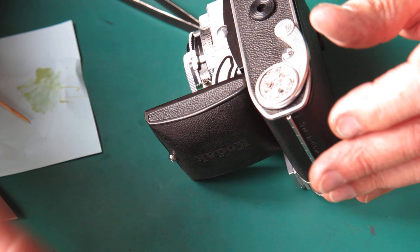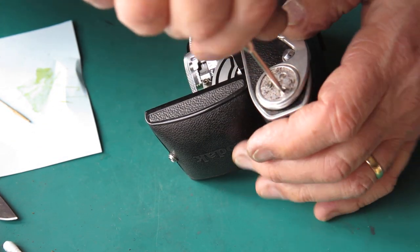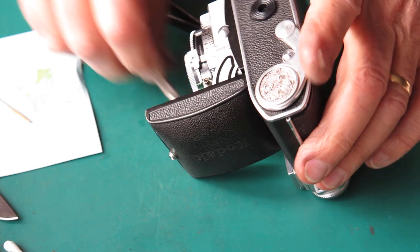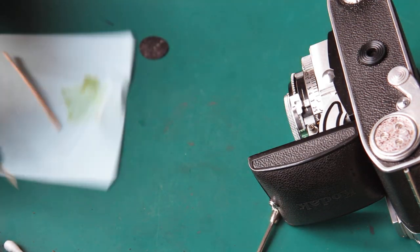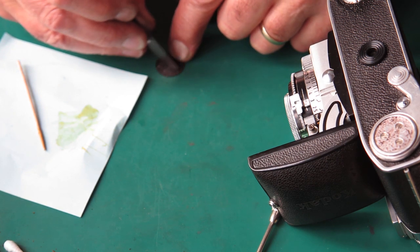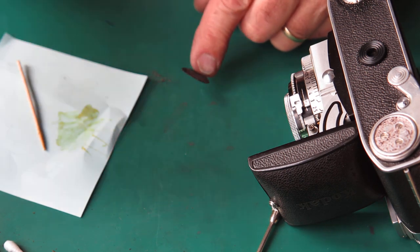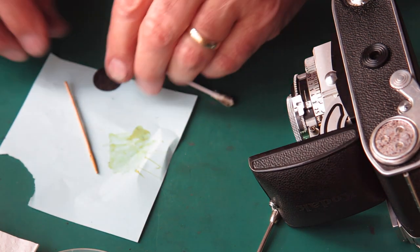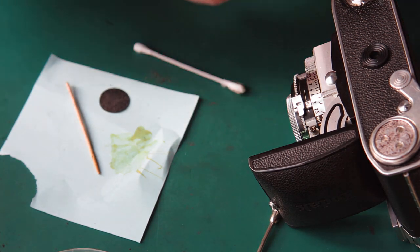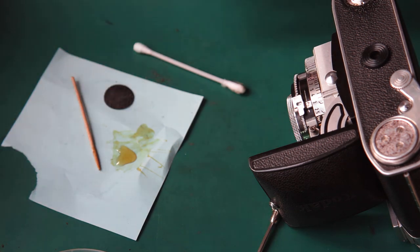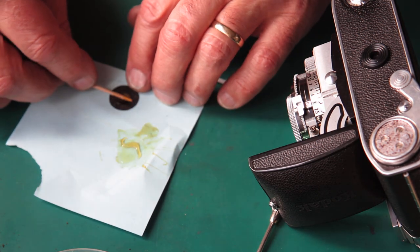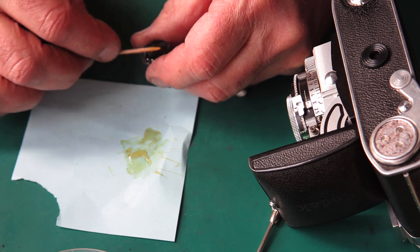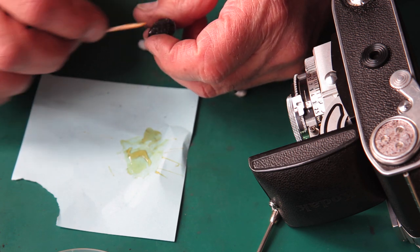And there should be a third screw here. And the leatherette patch for the advance lever. I'll need to give this the same treatment, really. Scrape off any lumps and bumps, things we don't want. Wipe it with naphtha to remove any dust or grease. And some adhesive. That's good coverage.